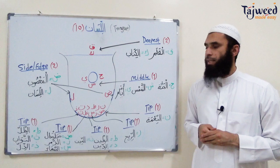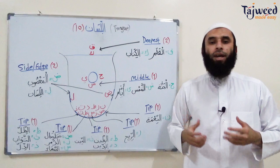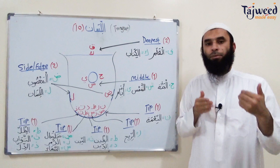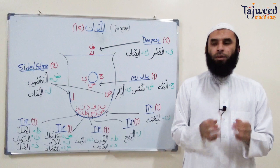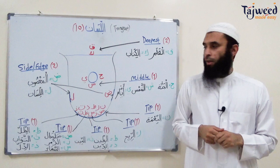In the next lesson inshallah, we're going to start the sifat al-huroof — the characteristics and qualities of the letters. We found out where letters are articulated from; now we'll find out how to pronounce them. It's not enough to just produce letters from the correct place — we need to know their characteristics: bouncing echo sounds, air flow, heavy or light qualities, and so on. Until then, Jazakumullah khairan, wassalamu alaykum wa rahmatullahi wa barakatuh.